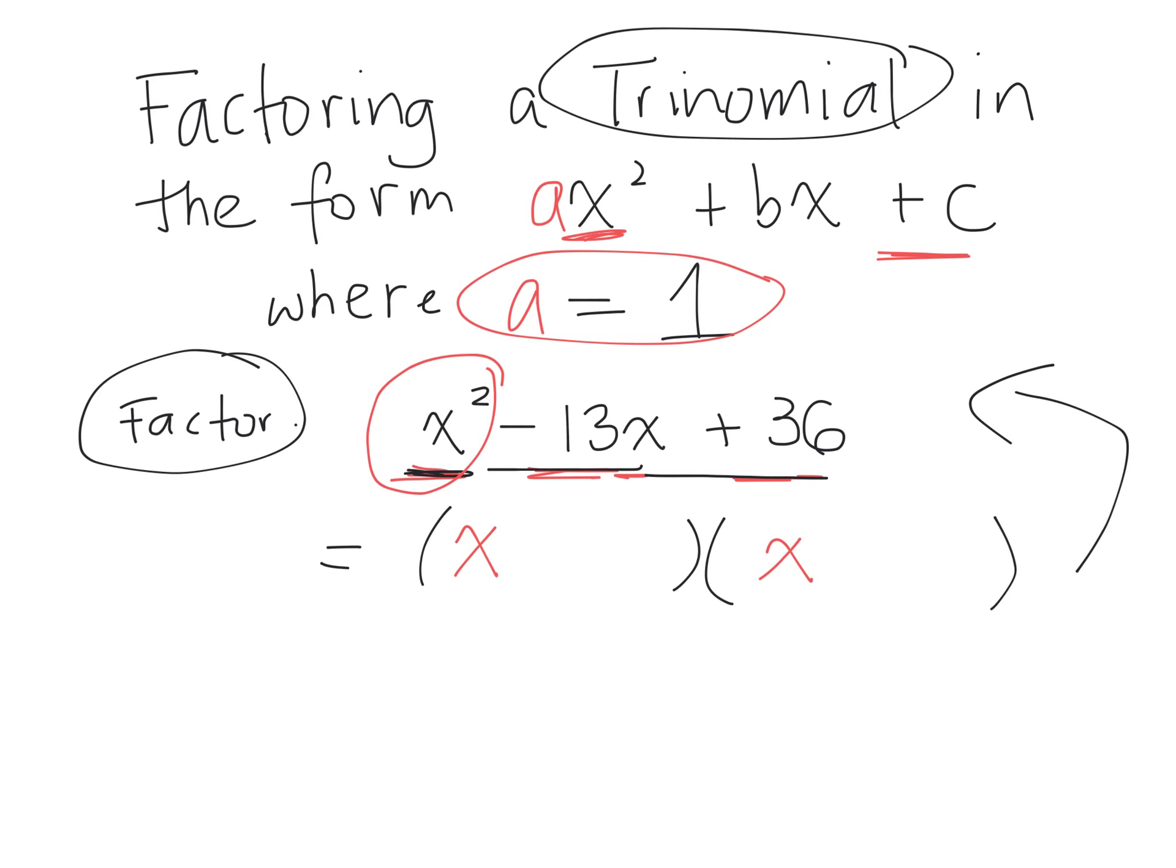So just as a reminder, this is b and this is c. I'm looking for two things that multiply together to give me c. But when I multiply them together, two things that multiply together to give me c, but the two terms have to add up to give me b. We're going to list factors of c. Two things that multiply together to give me c. So what times what is 36?